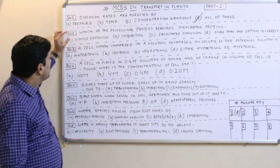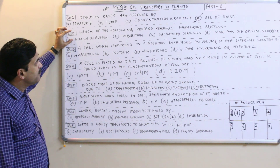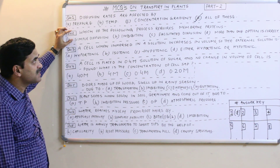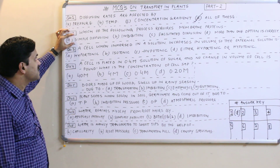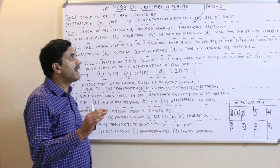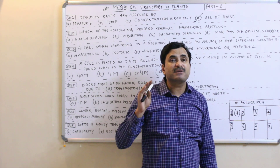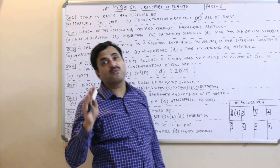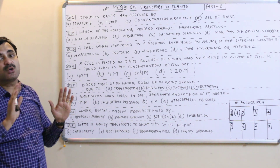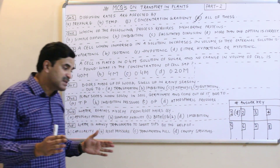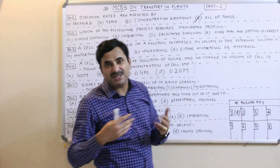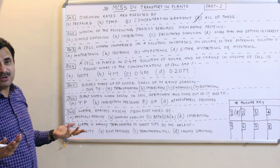Question number 2: Which of the following processes requires membrane proteins? Simple diffusion does not require any membrane protein — substances simply move from high to low concentration. In fact, for simple diffusion, there is no requirement of any membrane protein or even a membrane.